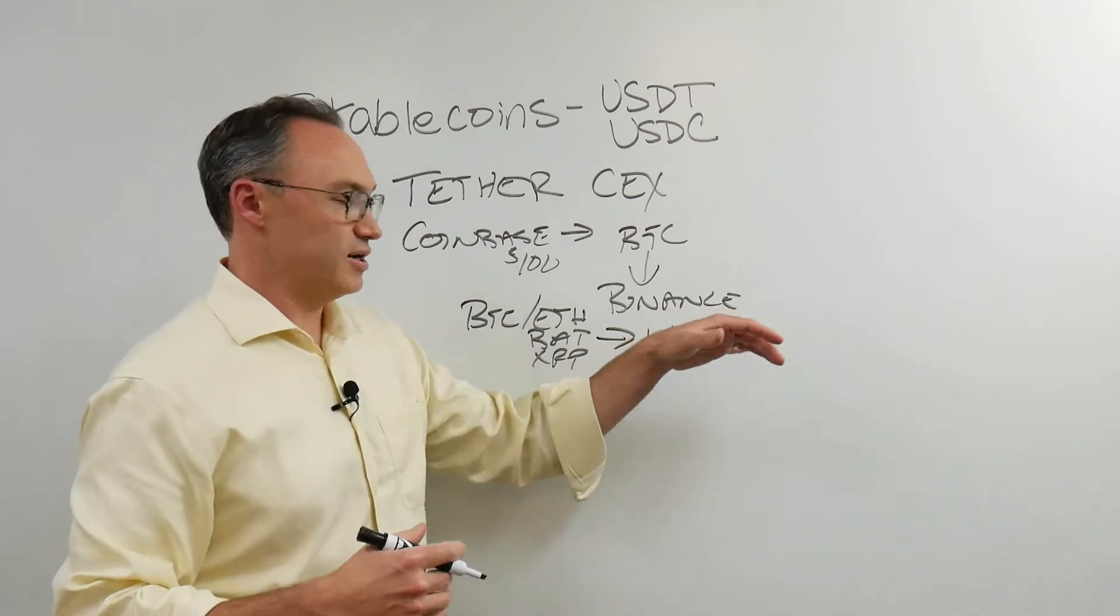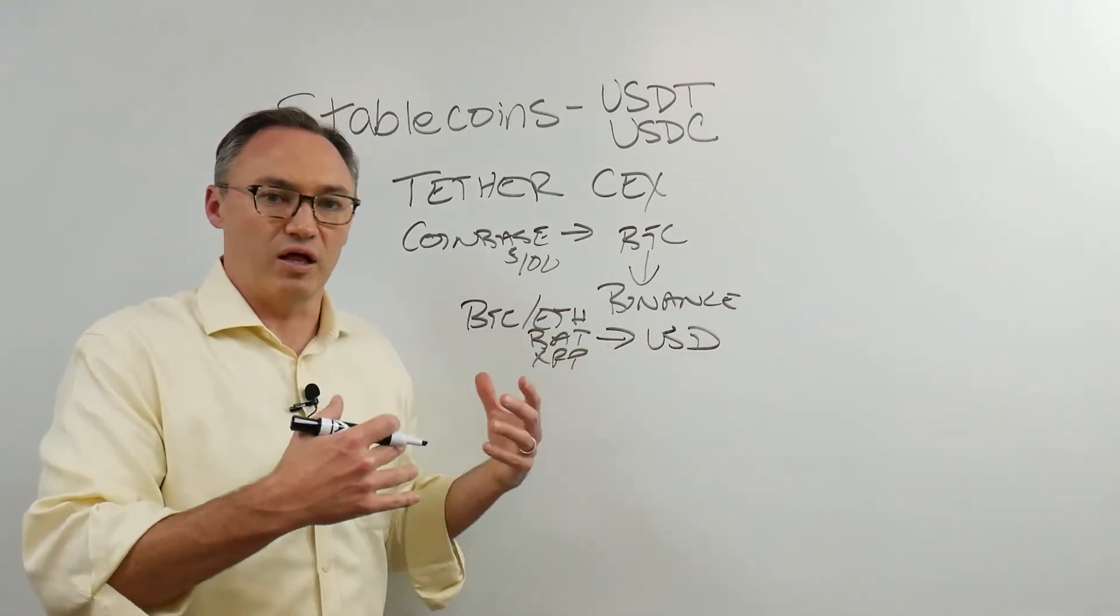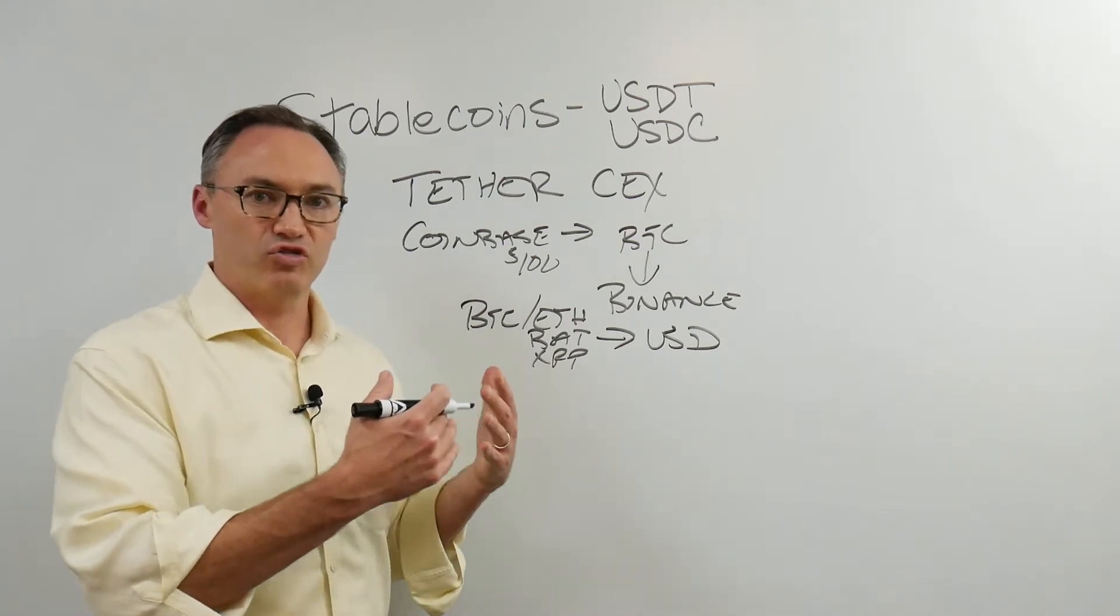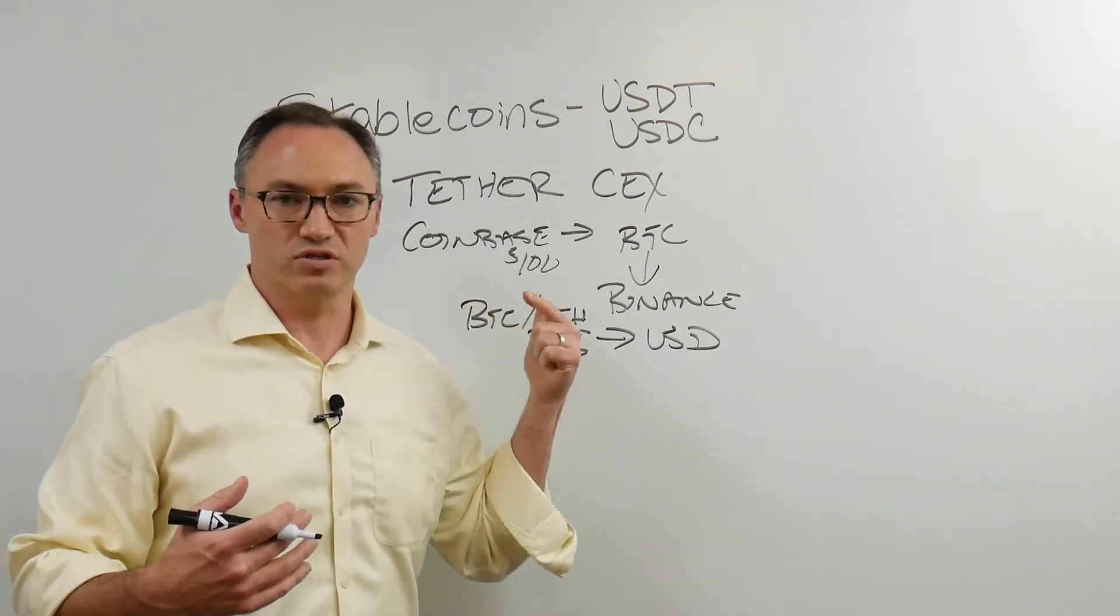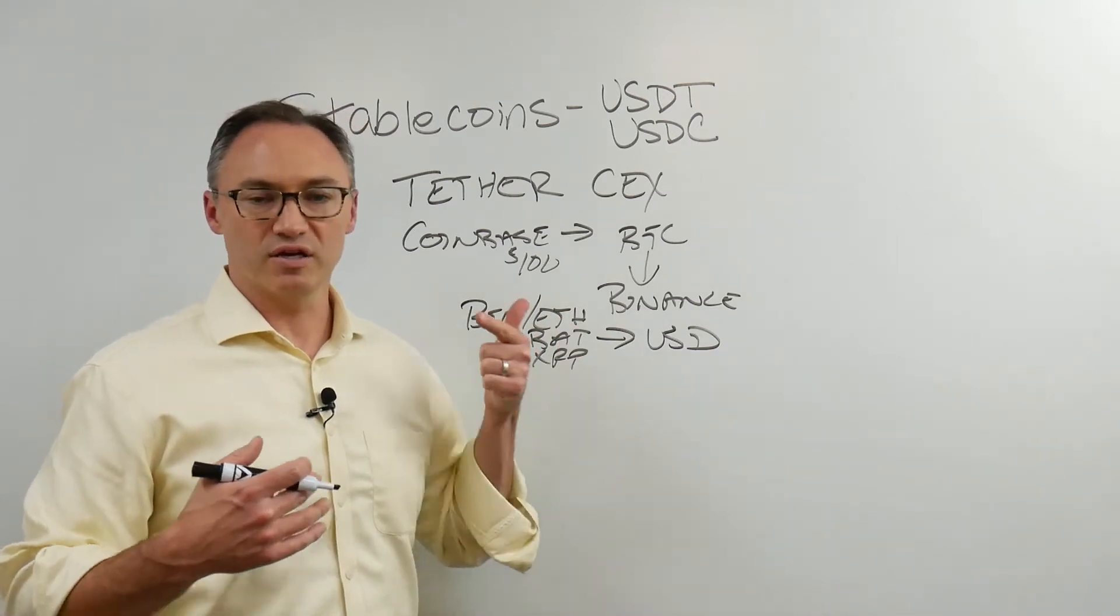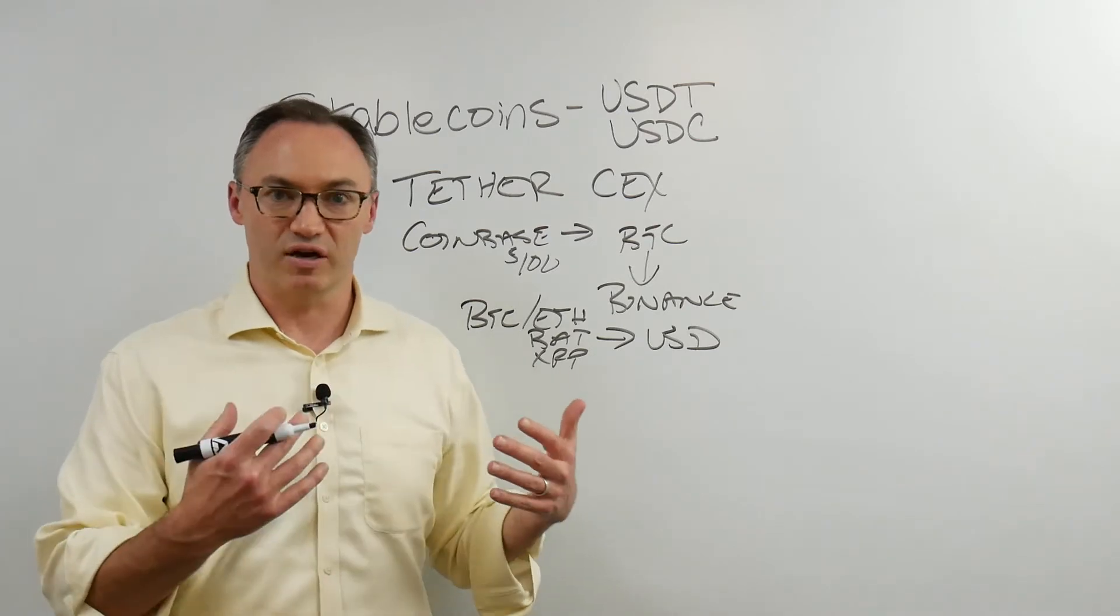OK, but the problem is Binance, Bittrex, Wobie, like all these exchanges, they can't hold all those dollars. They can't make fiat to crypto transactions. That's not what they're there for. They don't need to go through the regulations and the money transmitter license and all those issues that come with having and transmitting fiat currency.